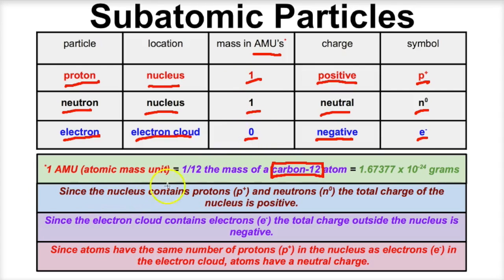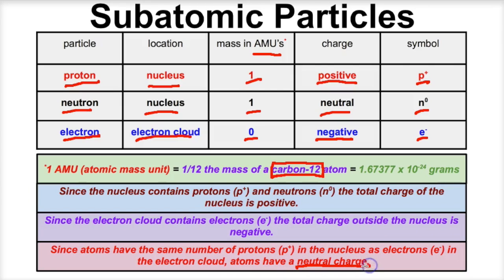Since the nucleus contains protons and neutrons, and protons are positive and neutrons are neutral, the total charge of the nucleus is positive. Since the electron cloud contains electrons, the total charge outside the nucleus is negative. Since atoms have the same number of protons as electrons, atoms overall have a neutral charge. Once atoms start to lose or gain electrons, they turn into what we call ions — but that's going to be a totally different video.